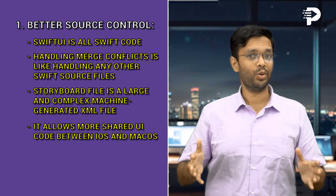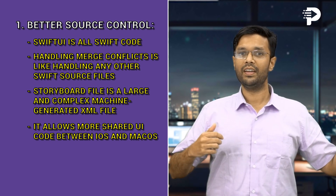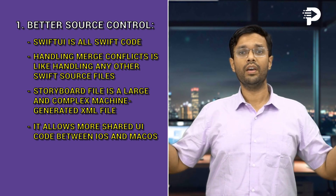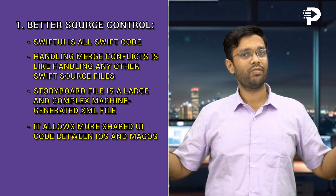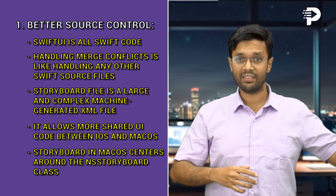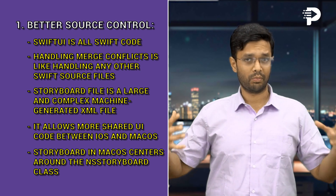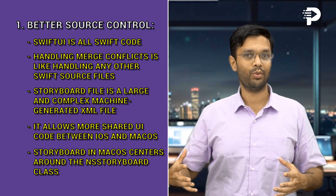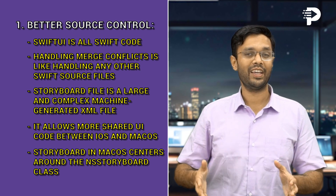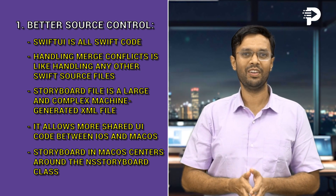SwiftUI allows more shared UI code between iOS and macOS. Apple follows AppKit for desktop apps and UIKit for mobile apps. But Storyboard files for macOS applications targeting AppKit are separate from mobile iOS targeting UIKit. Storyboard in macOS centers around NSStoryboard, whereas iOS uses UIStoryboard. Now if you use something called Catalyst, you can build a macOS app, but that's adding a lot of complexity to the development — like adding more butter to existing butter on a butter chicken. Don't do it.